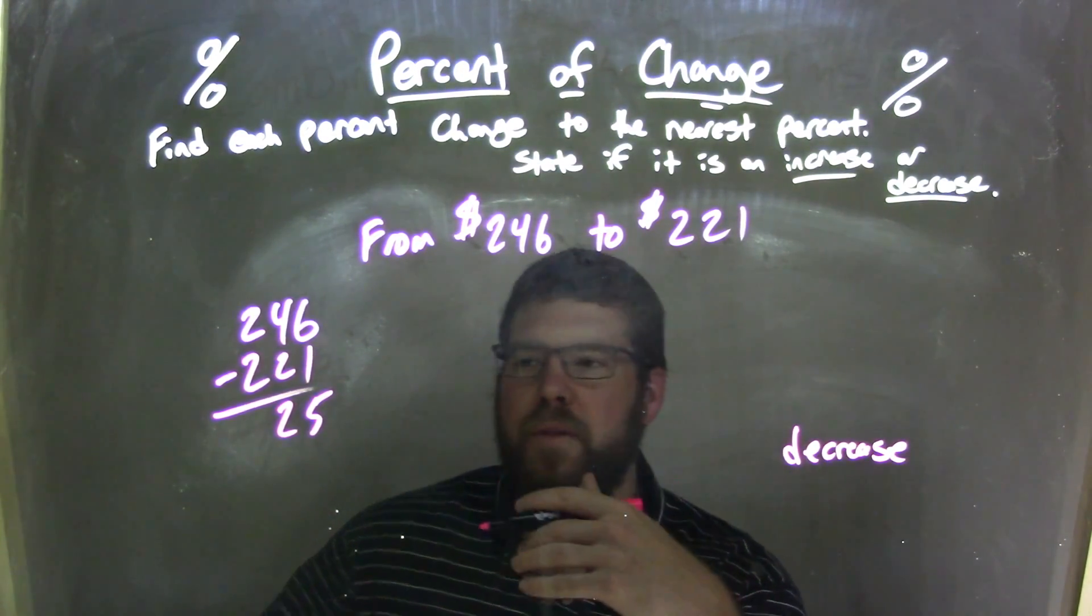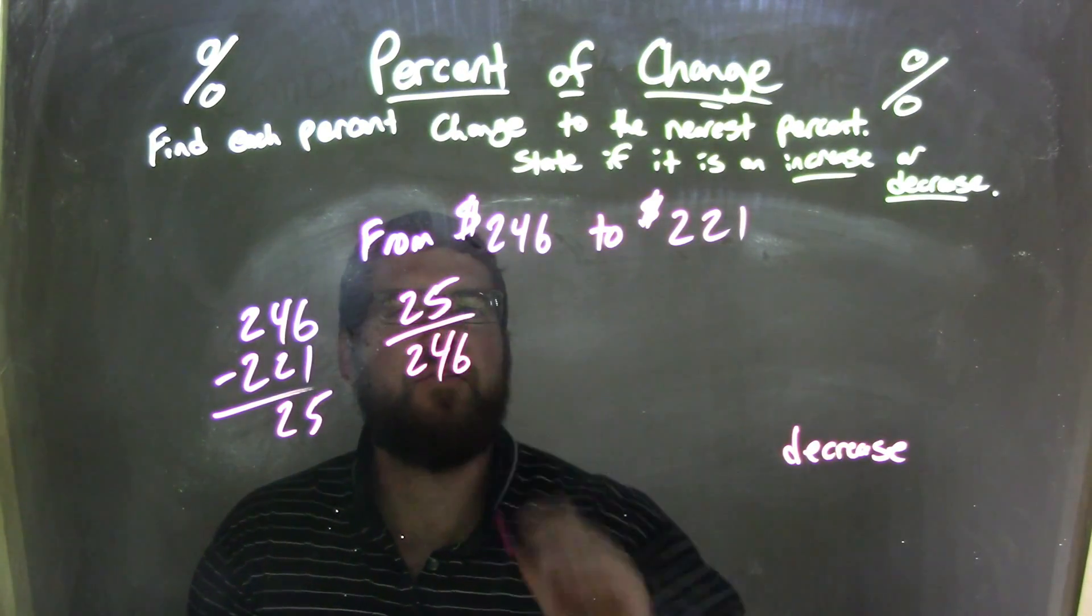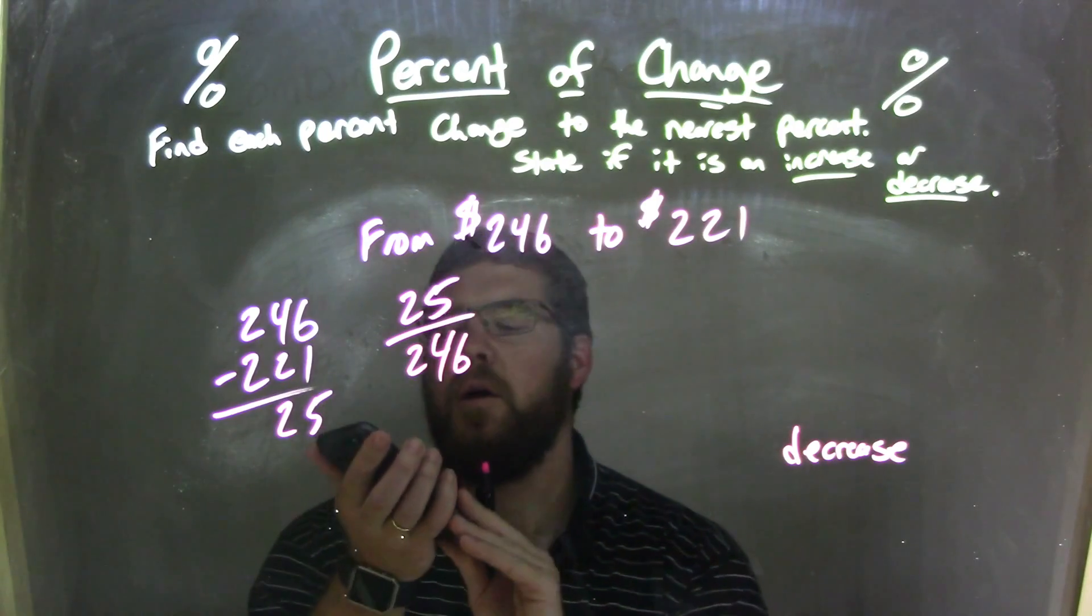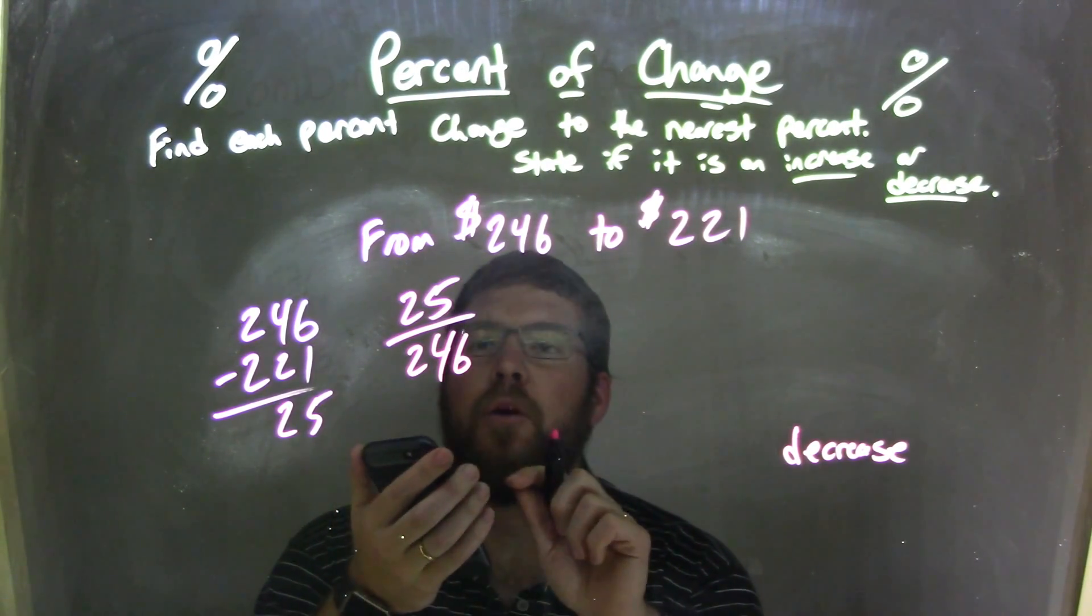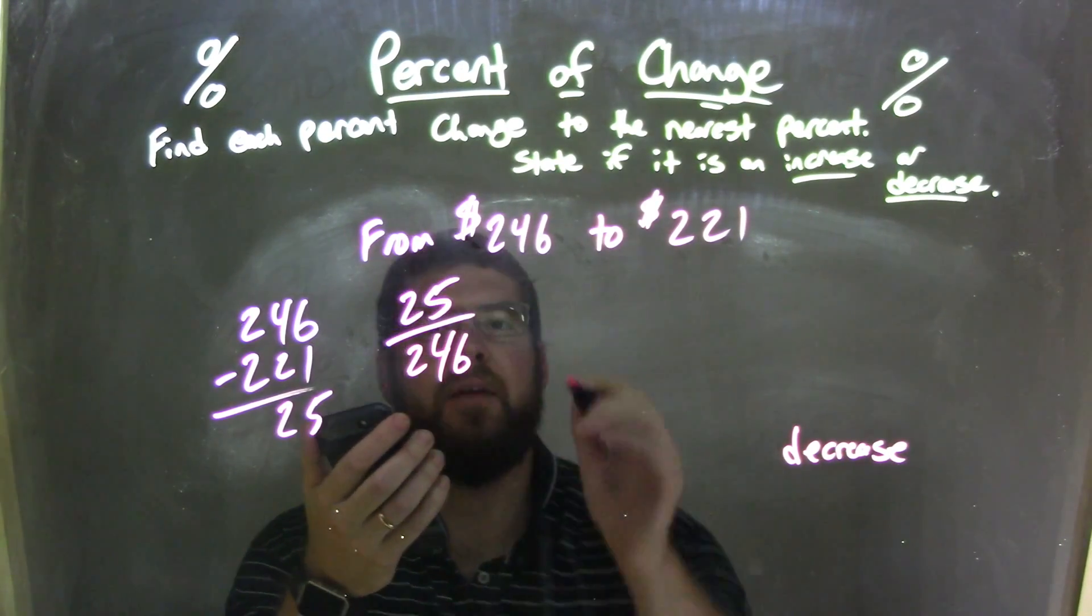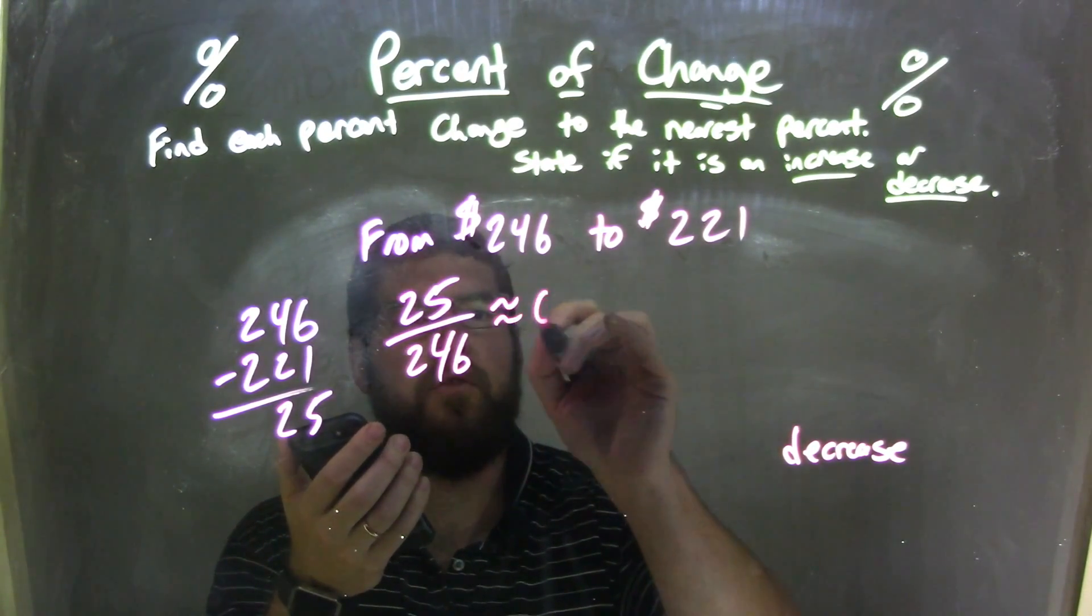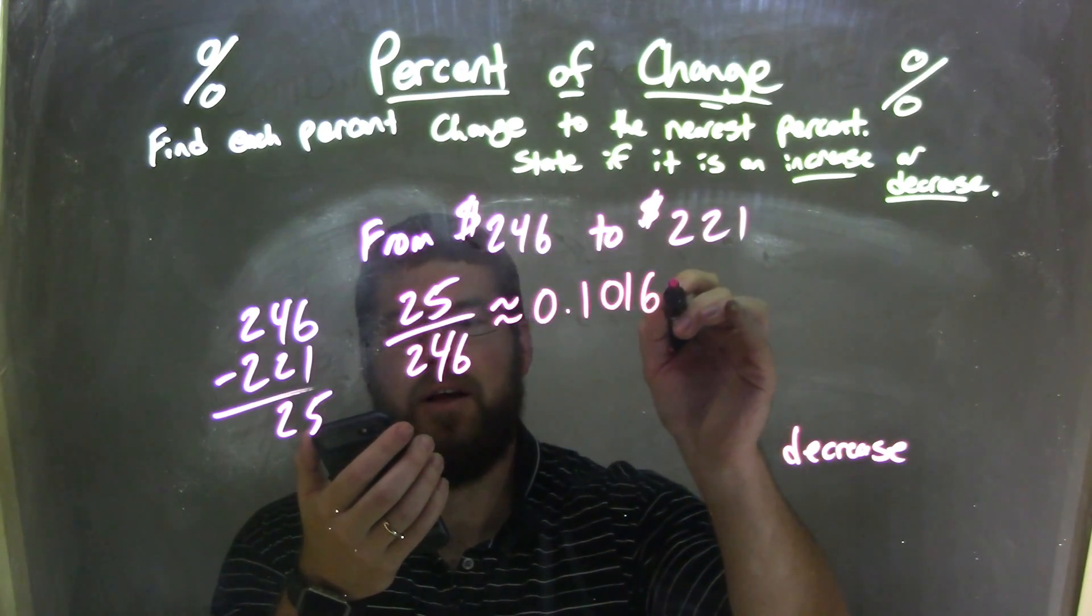So it's a $25 decrease between the two. We take that 25 and divide it by 246, the first number. We use our calculator here. 25 divided by 246 comes out to be approximately 0.101603.